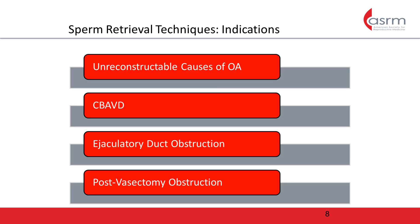Sperm retrieval techniques can be used for unreconstructable causes of obstructive azoospermia, such as widespread and multifocal vasal injury, CBAVD, and ejaculatory duct obstruction. These techniques may also be used to treat post-vasectomy obstruction in patients that have either failed or declined microsurgical reconstruction. It is important to note that surgical sperm retrieval compels the use of assisted reproductive technologies for conception, and will require the female partner to undergo fertility treatments as well.